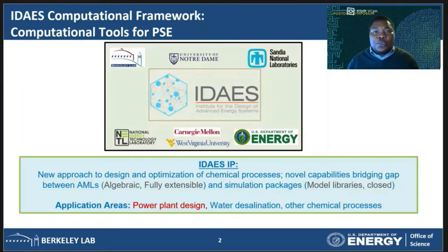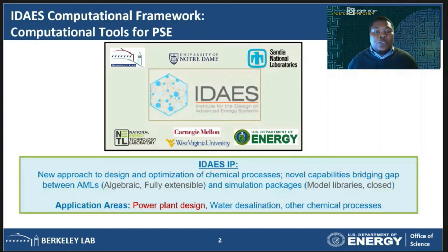The aim is to develop next-generation computational tools to enable the rapid design and optimization of chemical systems. Historically, there have been two types of tools for designing process systems which have sort of developed independently. On the one hand, we have algebraic modeling languages in which you're able to actually write your equations fully and the system is fully extensible. On the other hand, we have simulation packages in which you can only select from within the model libraries that are available — everything else is closed to the user. Going forward, we need to develop a novel set of capabilities which bridge the gap between algebraic modeling languages and simulation packages, and the IDES framework is being developed to do exactly this.